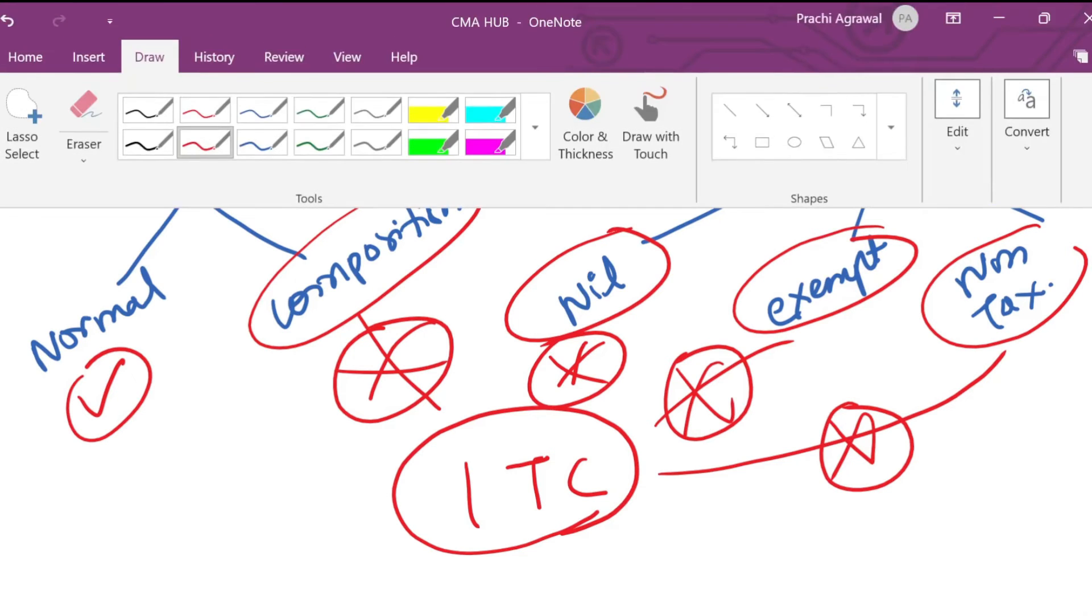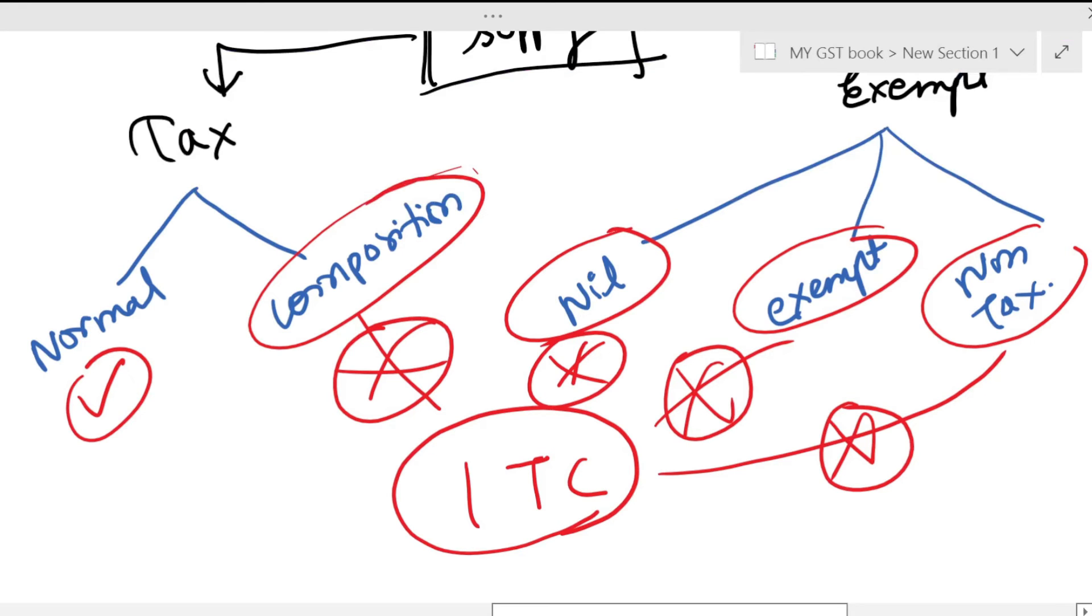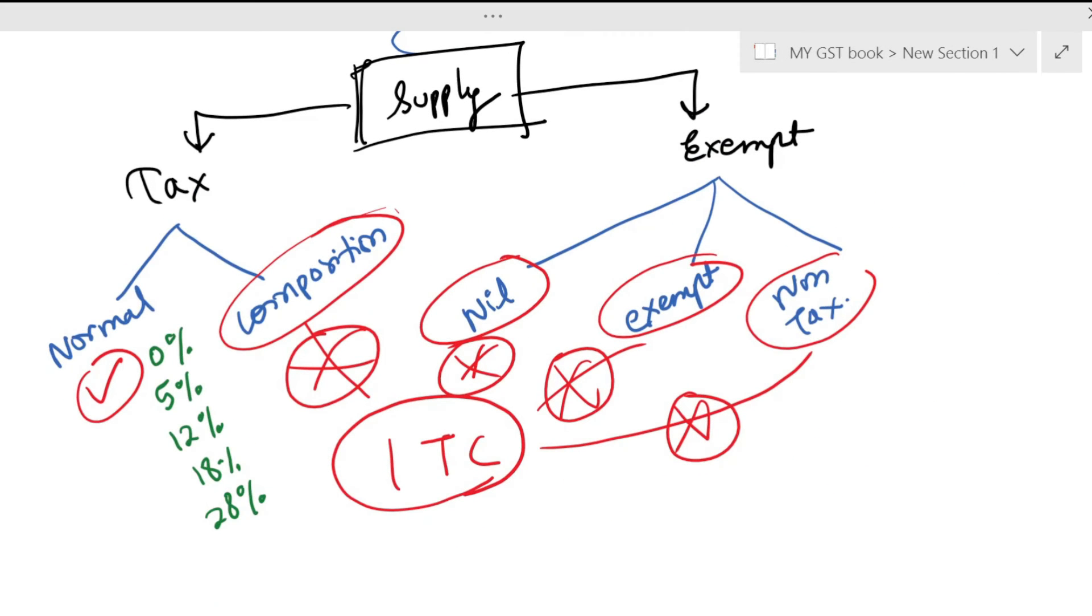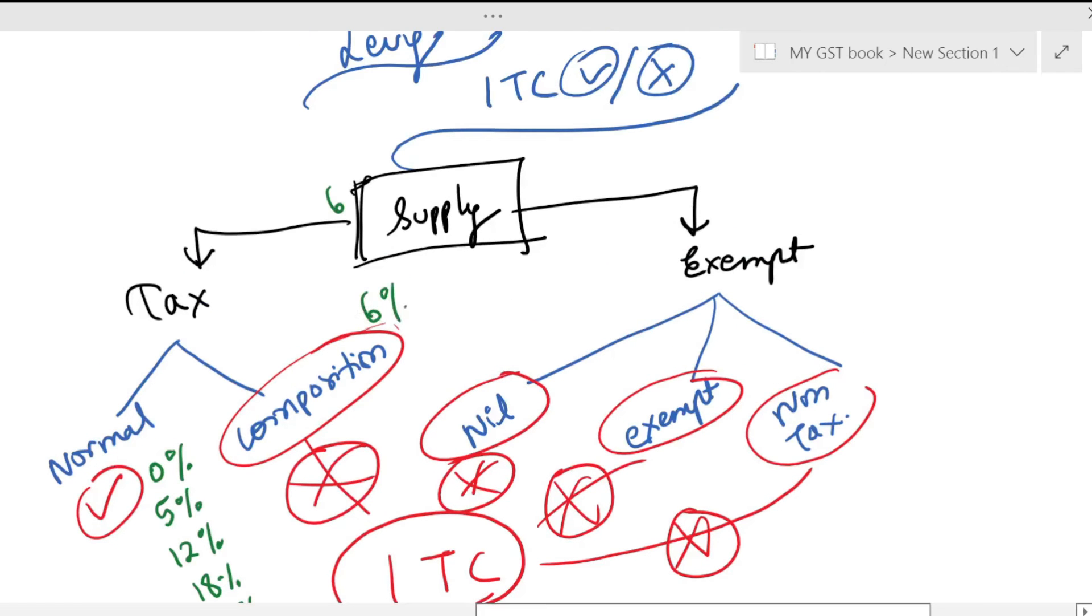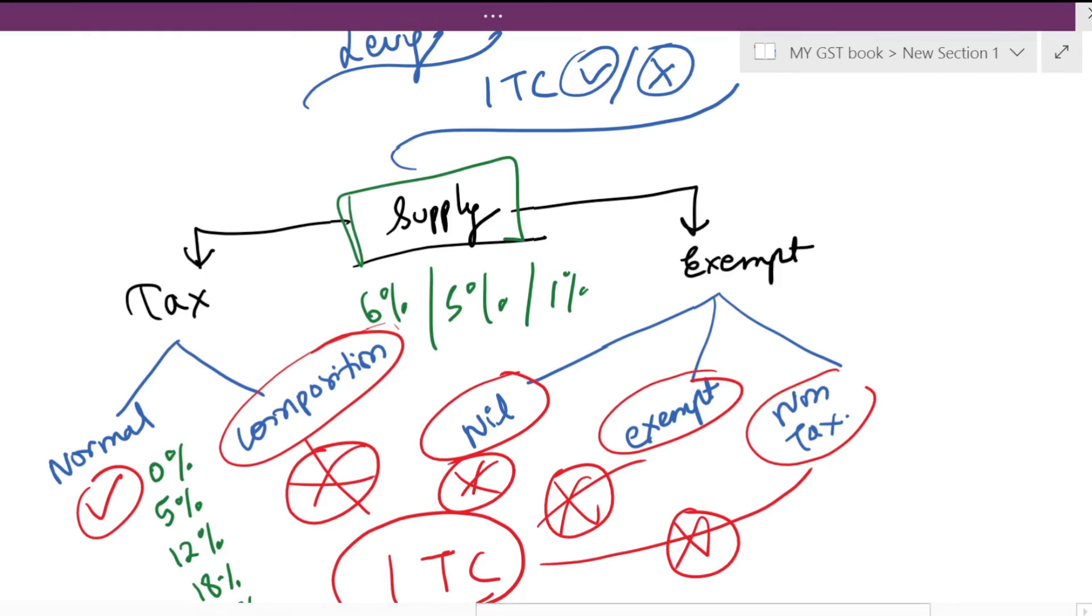I will give you the rates. Taxable: zero rate, 5%, 12%, 18%, and 20%. And composition: 6%, 5%, or 1%. Okay, so if you have this doubt that ITC is not available.